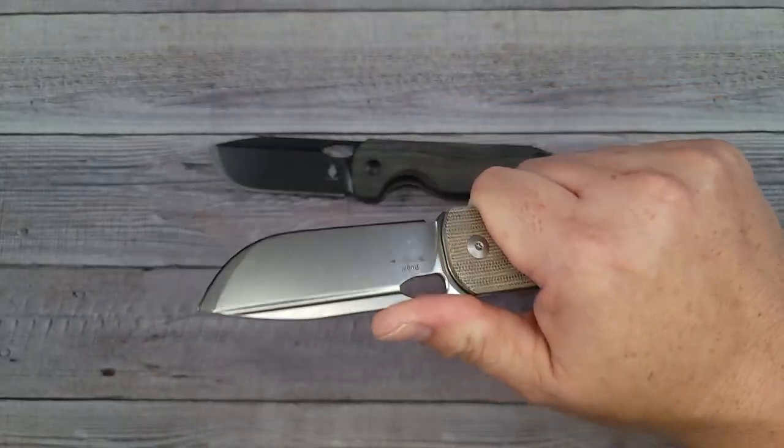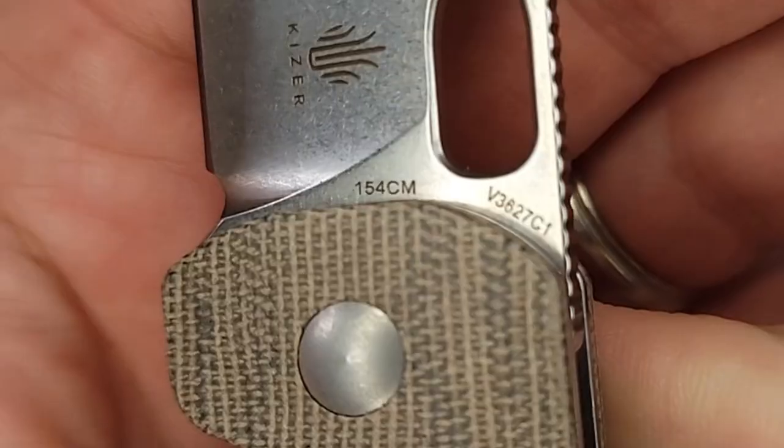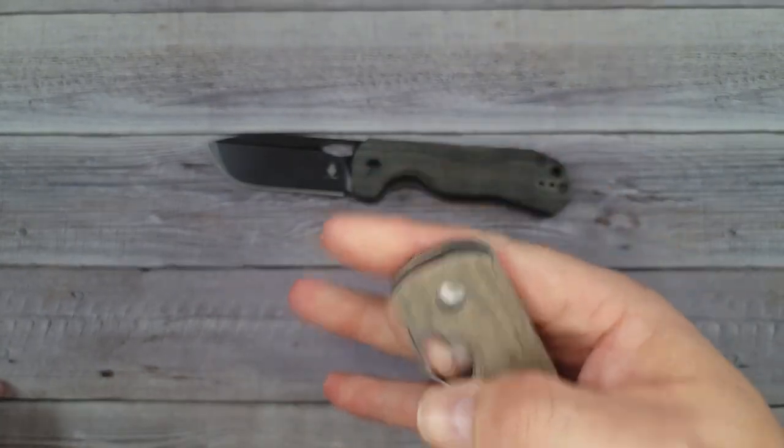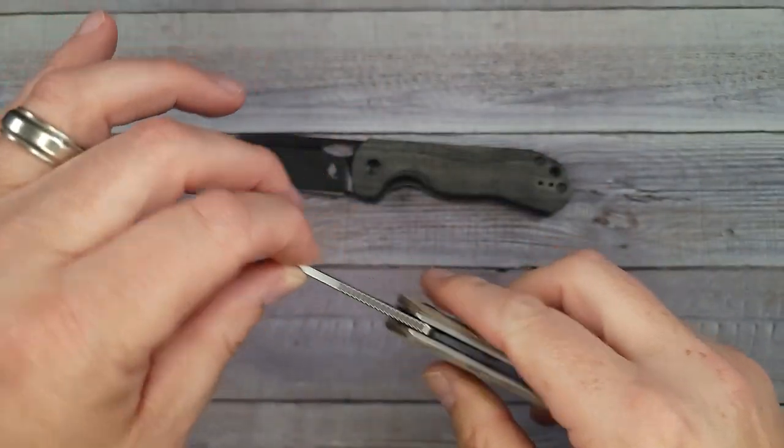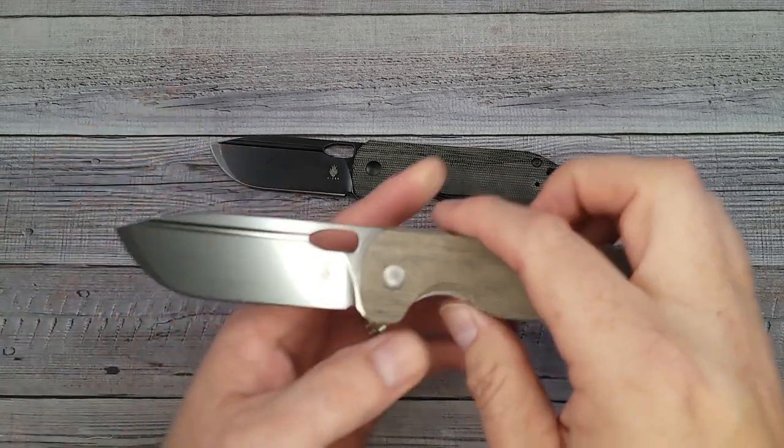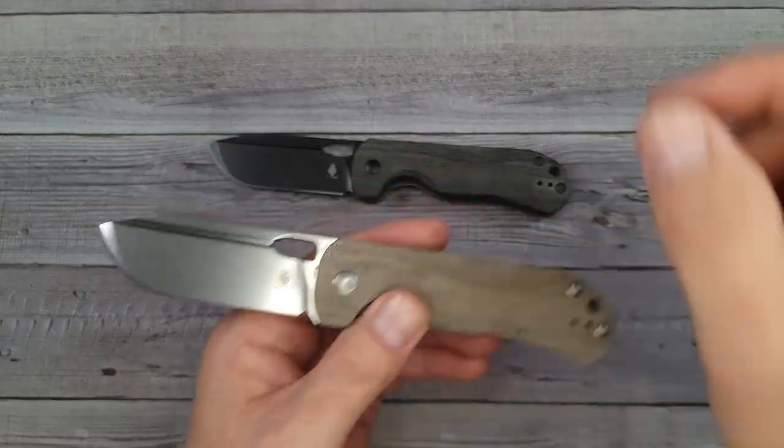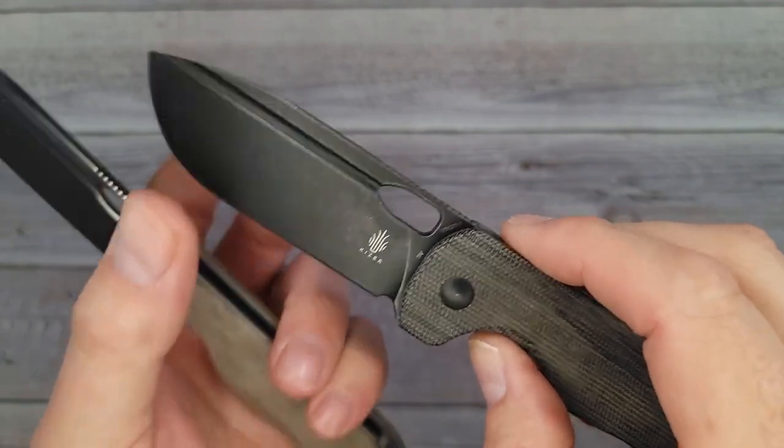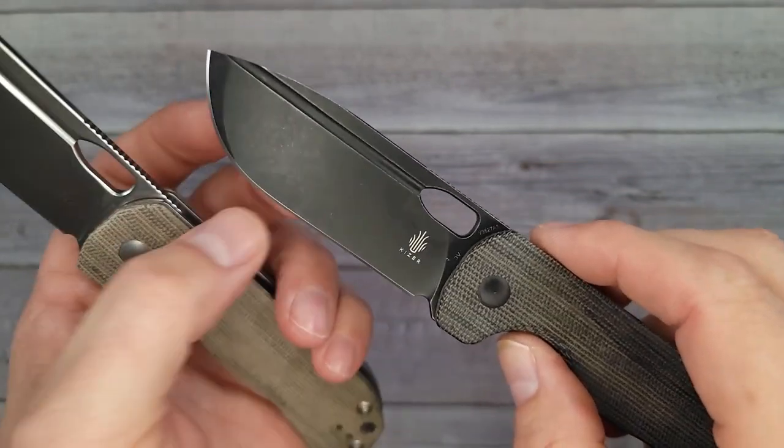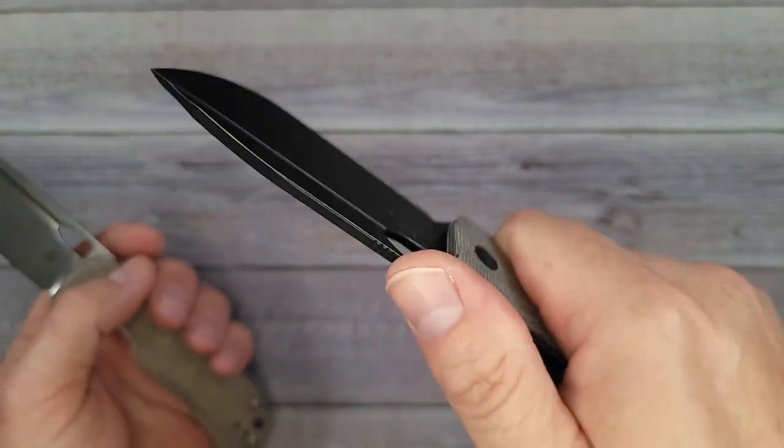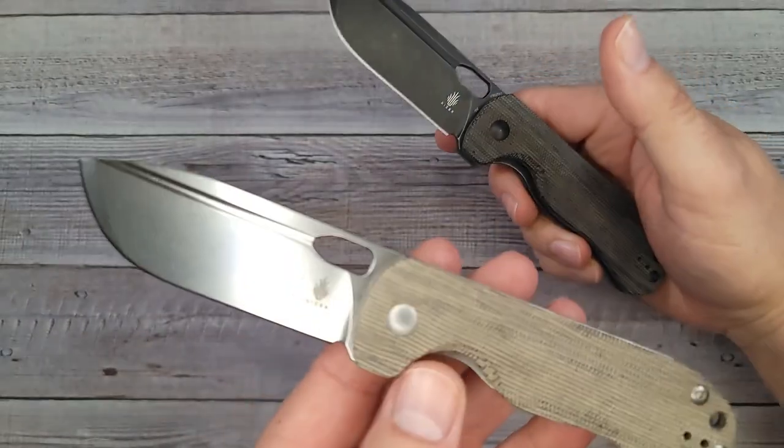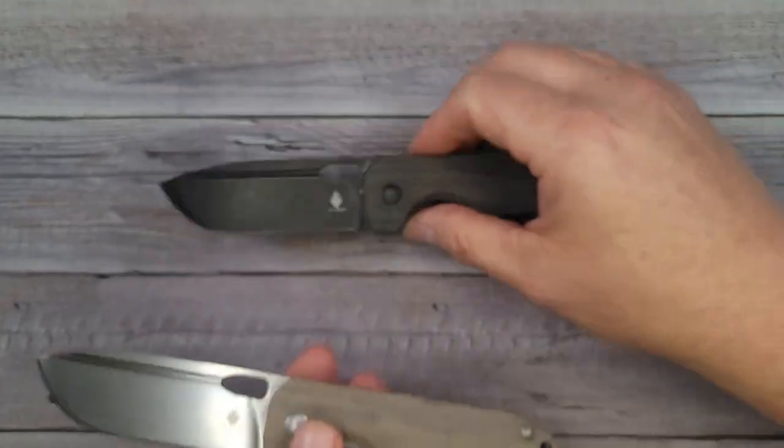This is the exact same thing as this except this is 154CM baby. You know I love me some 154CM. This one's going to be a little less. These run $69 so these are $20 cheaper. This 3V steel is stuff that people use for bushcrafting and things like that because it is so tough. So if you don't need something that will cut through nails you can always go with the 154CM version.